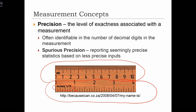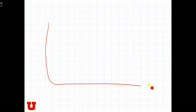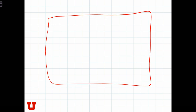Sometimes, especially in geography and GIS applications, we deal with something called spurious precision, which is when we report a data value to be more precise than it actually is, based on the precision of the tools used to take the measurement. For example, we might have a map of the world the size of your computer screen.